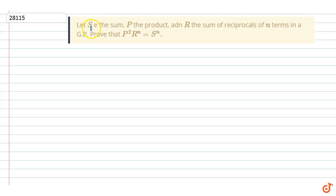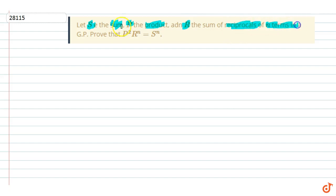The question given is: let S be the sum, P be the product, and R be the sum of reciprocals of n terms in a GP. Then prove that P squared into R to the power n equals S to the power n.